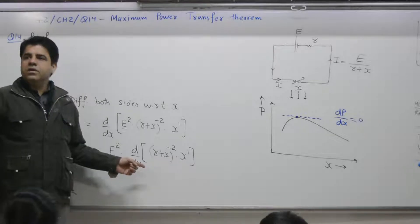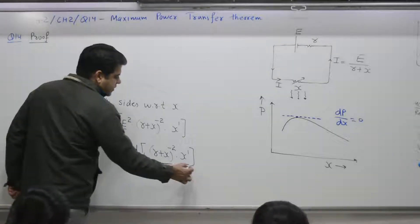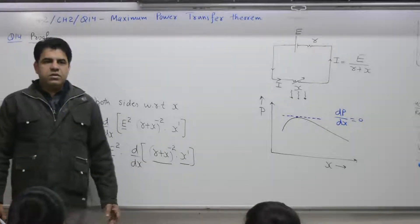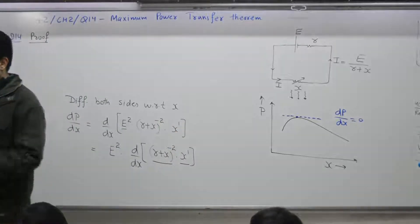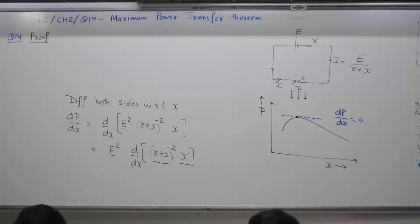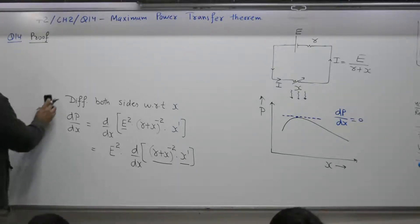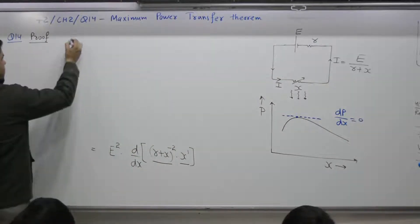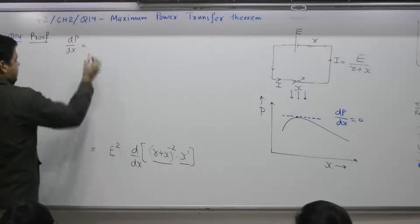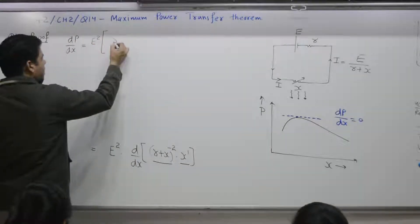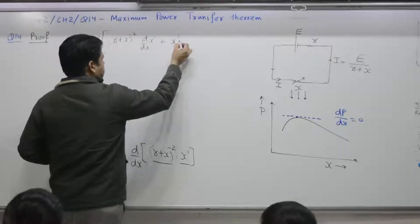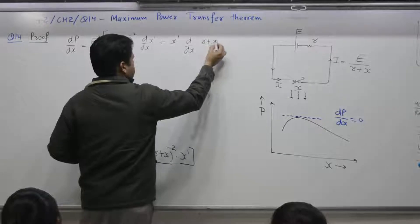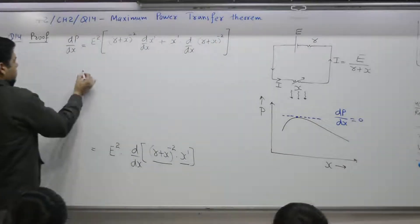What is the differentiation of a product of two functions? Function 1 and function 2. The formula from Chapter 0 is: first into differentiation of second, plus second into differentiation of first. Applying this, you get E squared times (R plus X) to the power minus 2 into differentiation of the second term, plus the second term into differentiation of the first.